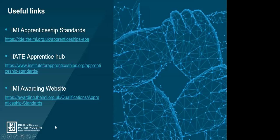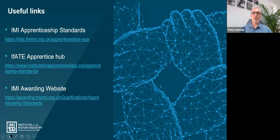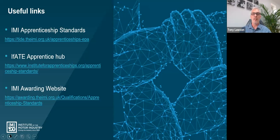Question from Paul McGill: 'Can an employer request an apprentice be put forward for EPA even if the training provider is not happy to sign the tri-party agreement? If so, where does that leave the training provider especially if the apprentice fails?' Short answer: if all three parties have not signed the tri-party agreement, IMI as an endpoint assessment organization - or any other EPAO - cannot conduct an EPA. If the training provider is not happy and does not sign the tri-party agreement, an EPA will not take place. It is a mandated requirement that all three parties must sign - those differences need to be resolved before the booking is submitted.